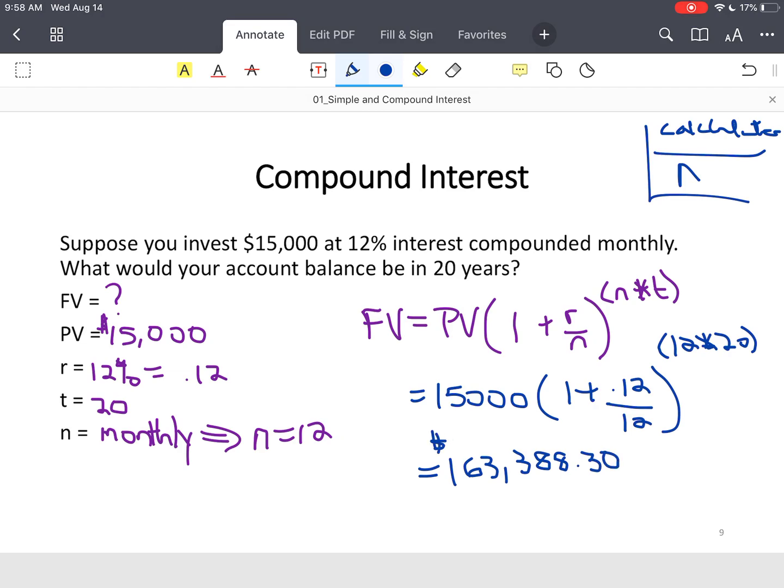and that balance in 20 years for this initial investment will be $163,388.30. So you made a lot of interest simply by, number one, playing a time game, because of the exponent and your compounding periods. This is your future value. So that's how much will be in that account in 20 years. You're earning 12% compound interest on a monthly basis for 20 years.